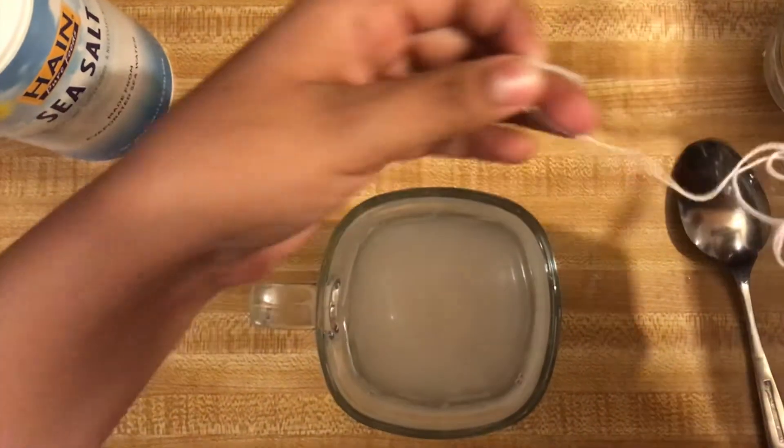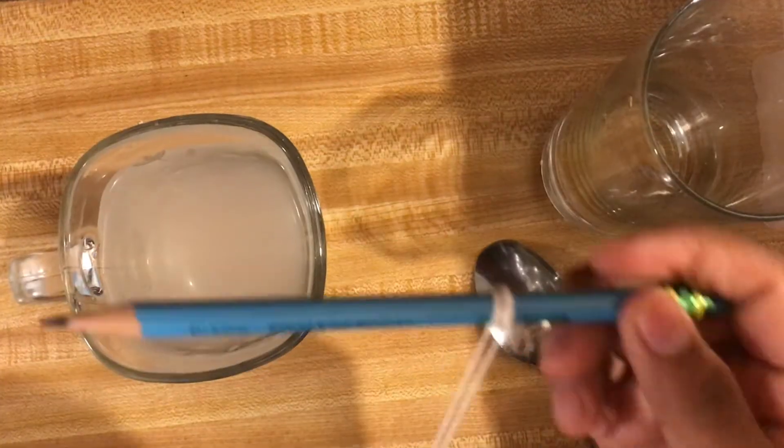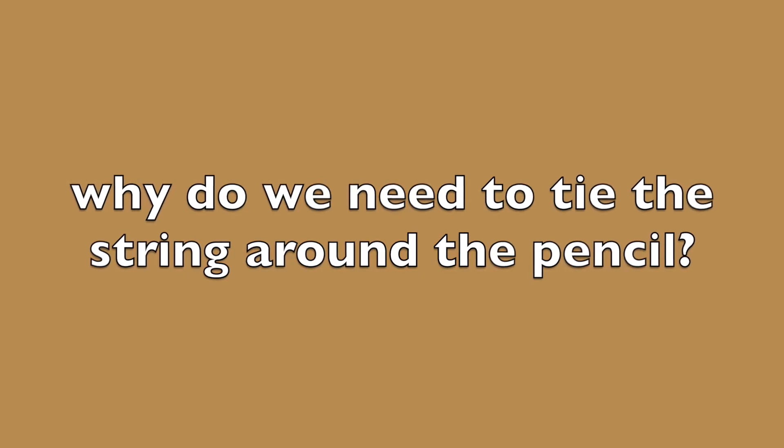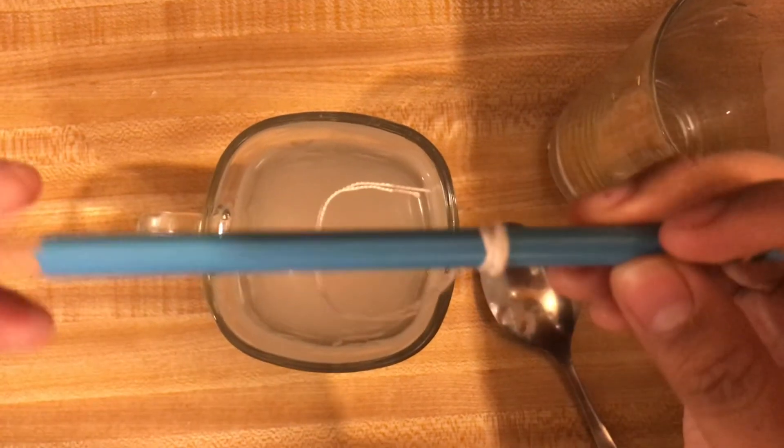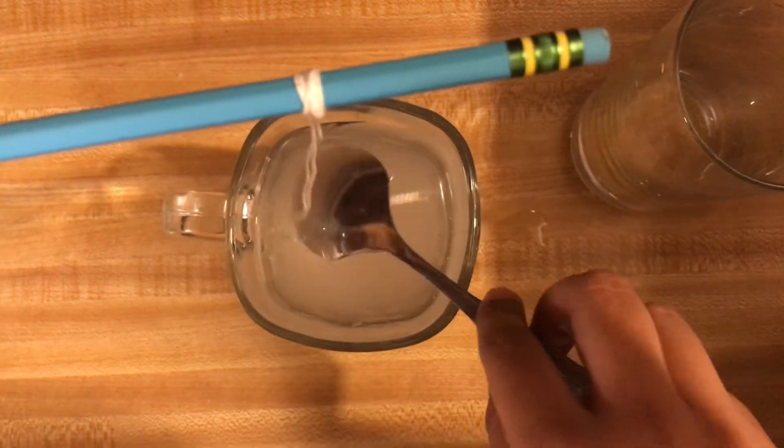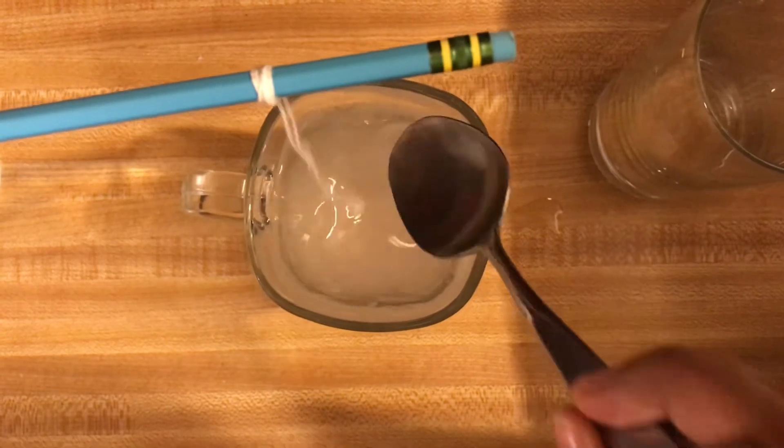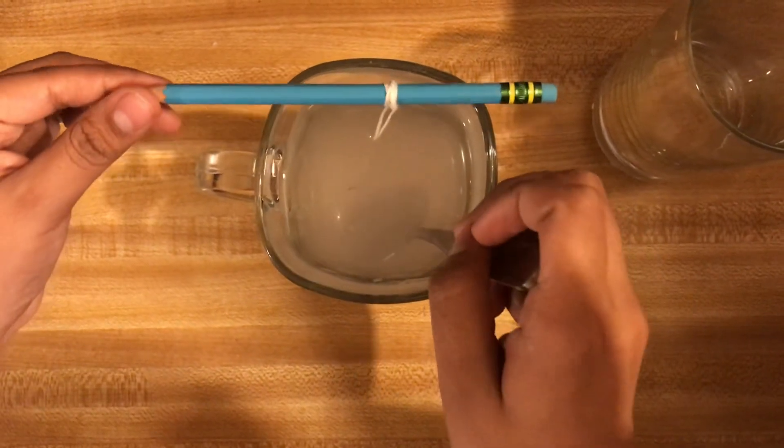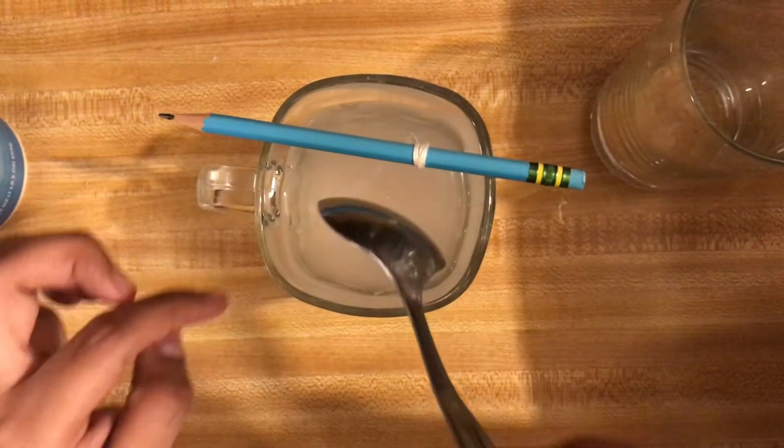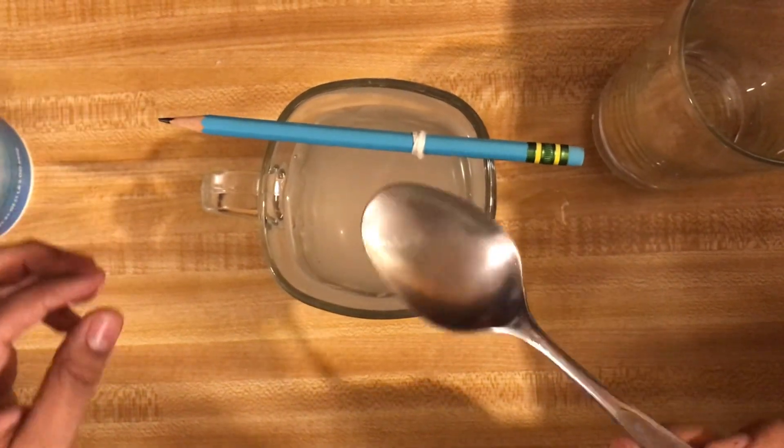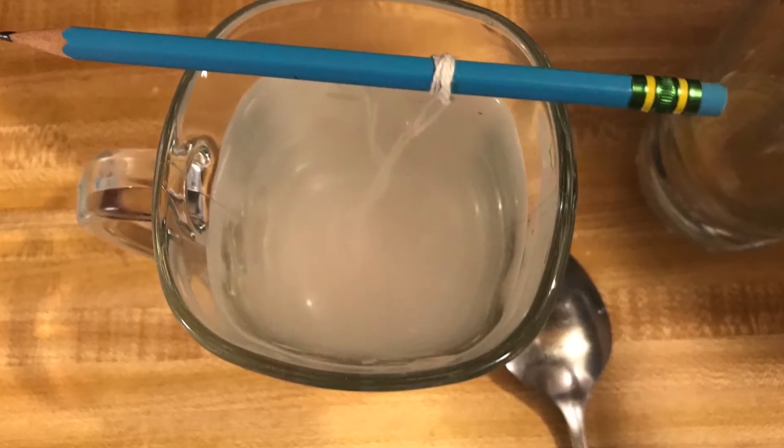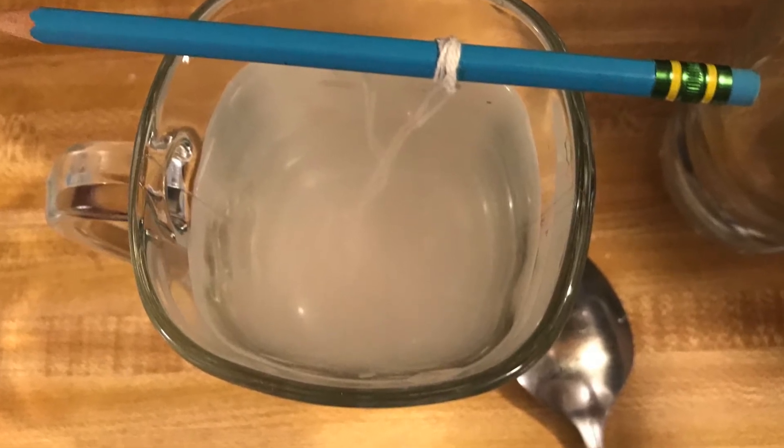Then I get my pencil and string and tie the string around the pencil. Then I get my spoon and push the string down as much as possible so it's able to absorb. And we're all set. Now we just have to leave the cup on the side and wait a couple of days for the salt crystals to form.